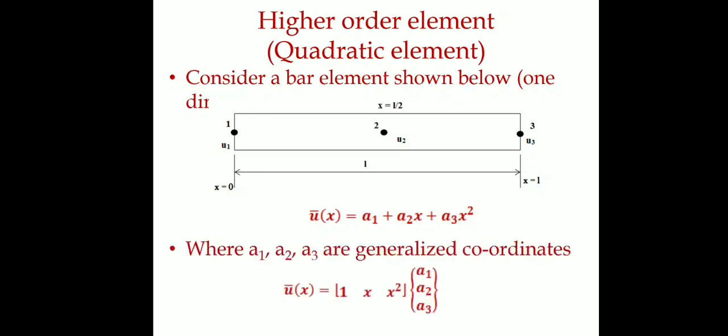We set up the matrix formula: u = [1, x, x²] · [a1, a2, a3]ᵀ. The boundary conditions for three nodes are: u = u1 at x = 0, u = u2 at x = L/2, and u = u3 at x = L.